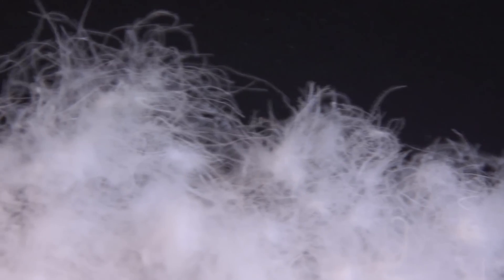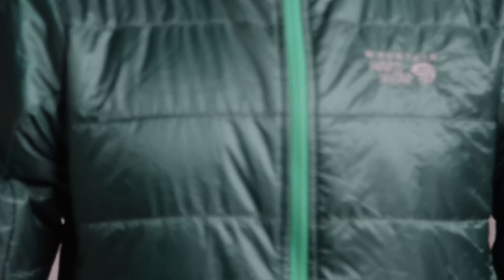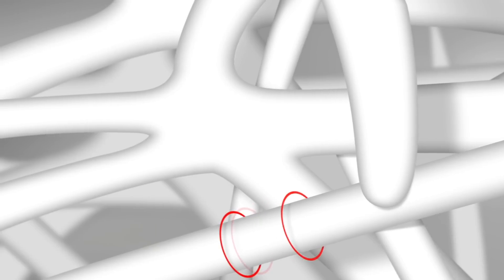Down's a fantastic insulator because the very nature of Down is made up of thick and thin fibers. ThermoQ Elite works exactly the same way Down does in that we have thick fibers that maintain loft and separate the fibers so that you have a place to trap the air.